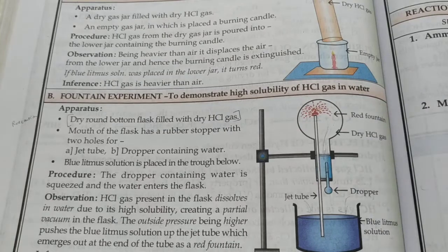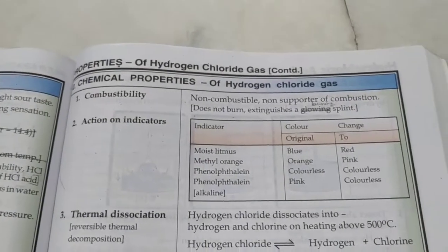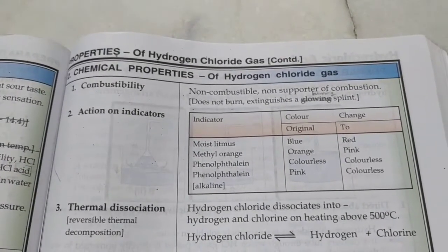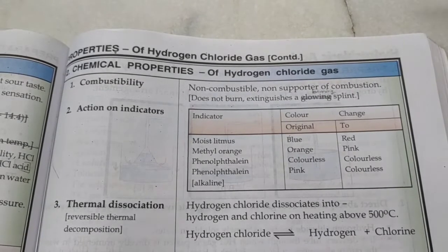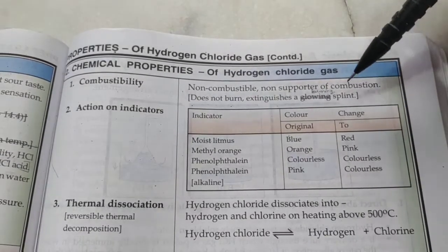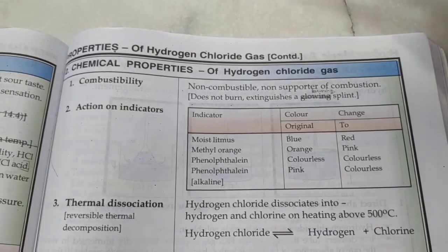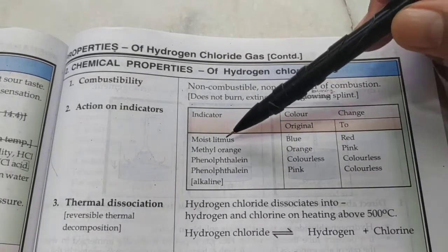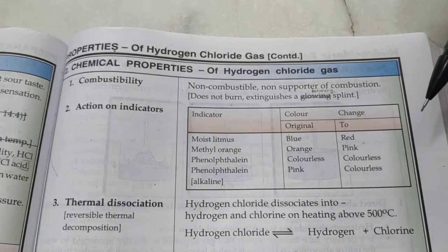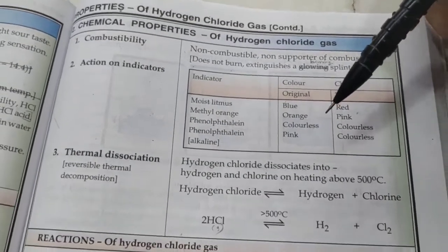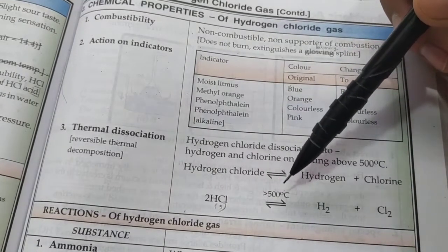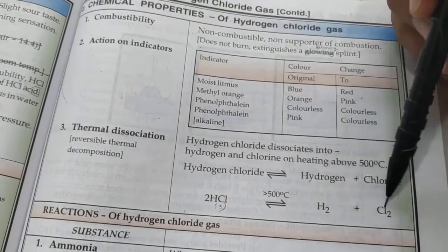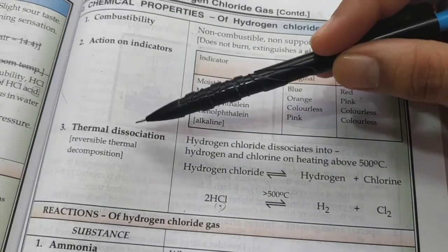Now let's talk about the chemical properties of hydrogen chloride gas. It is non-combustible and does not support combustion — it extinguishes a burning splint, though that is not a chemical test. It is acidic and changes the color of certain indicators. It also undergoes thermal dissociation: if you heat HCl gas to a temperature greater than 500°C, you get hydrogen and chlorine gases. This is a reversible reaction, hence the term dissociation.